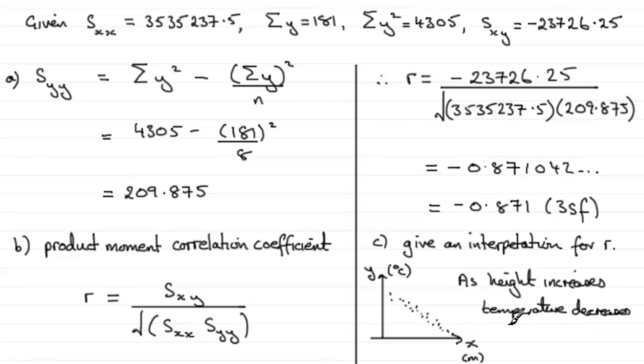They want a description in the context of the question, rather than just saying it's negative linear correlation — they want it answered in the context of the question.